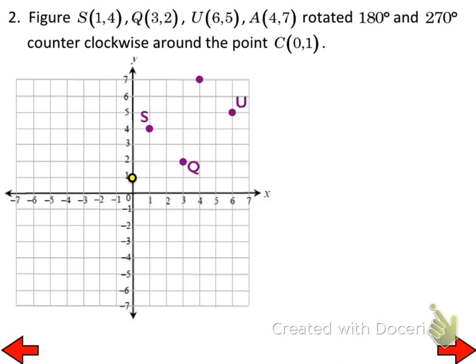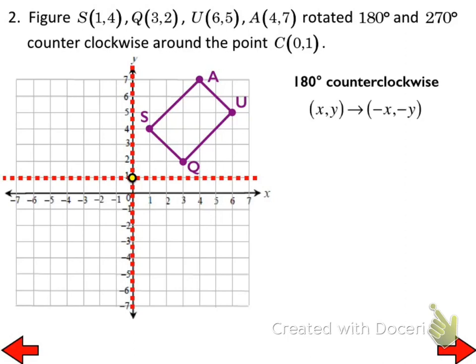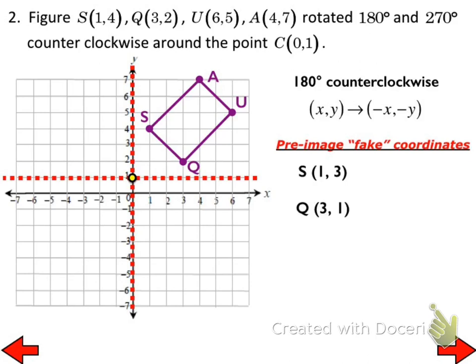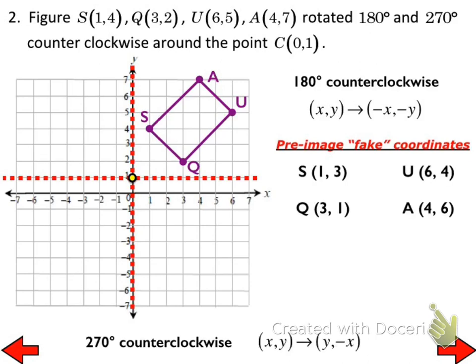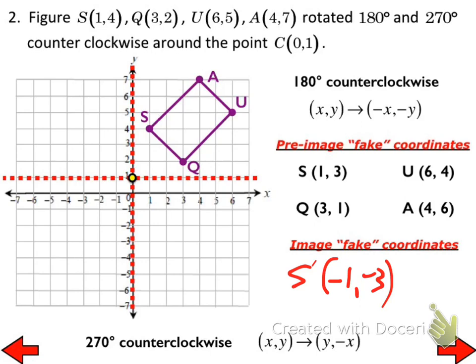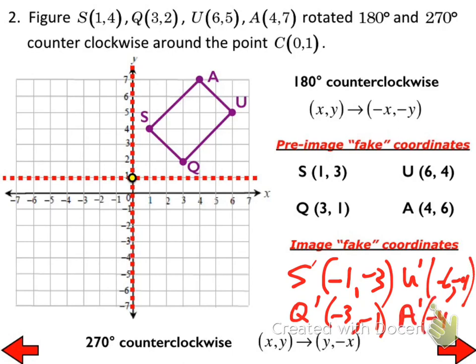We're going about the point (0, 1). When I plot my original figure, I need to create a fake coordinate system right there, because now (0, 1) is my fake origin. Using the 180-degree counterclockwise rule with my pre-image fake coordinates: S prime is (-1, -3), Q prime is (-3, -1), U prime is (-6, -4), and A prime is (-4, -6).